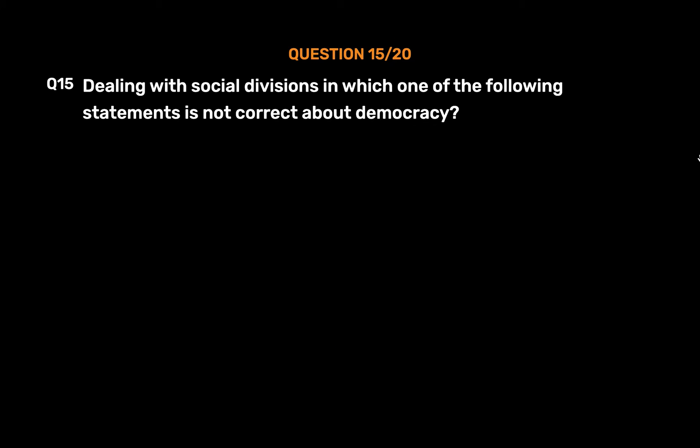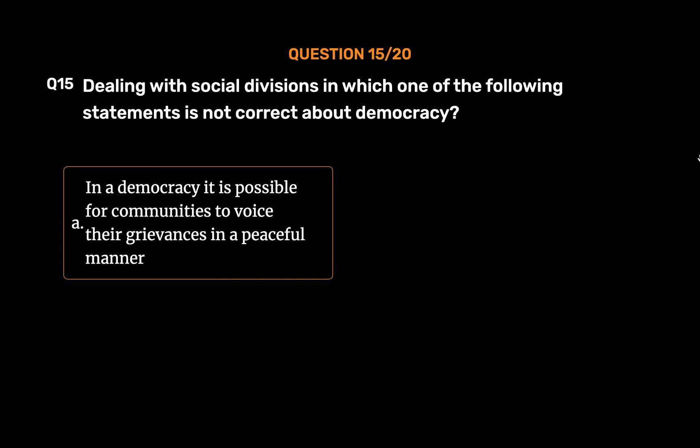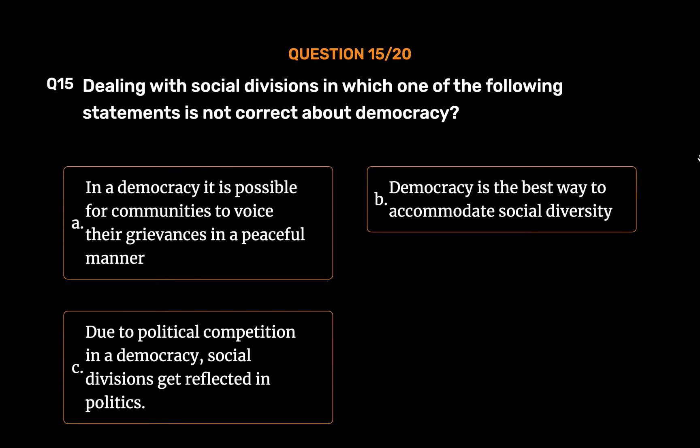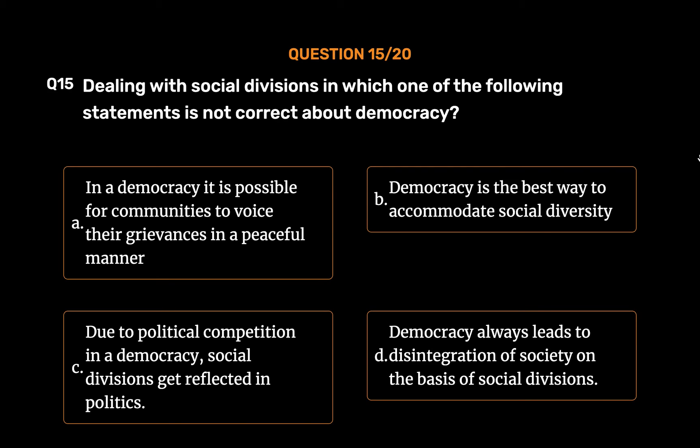Question number 15. Dealing with social divisions — which one of the following statements is not correct about democracy? Option A: In a democracy it is possible for communities to voice their grievances in a peaceful manner. Option B: Democracy is the best way to accommodate social diversity. Option C: Due to political competition in a democracy, social divisions get reflected in politics. Option D: Democracy always leads to disintegration of society on the basis of social divisions.